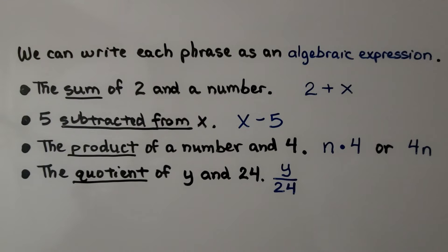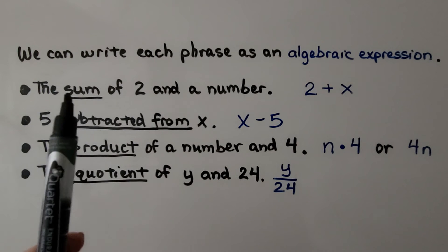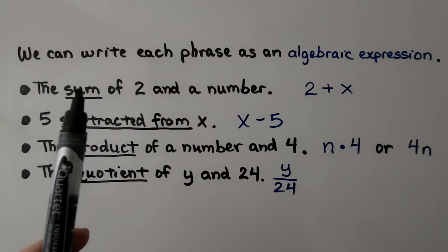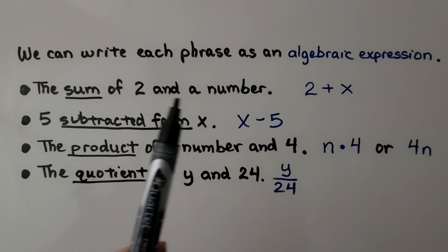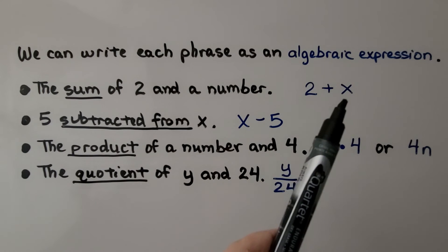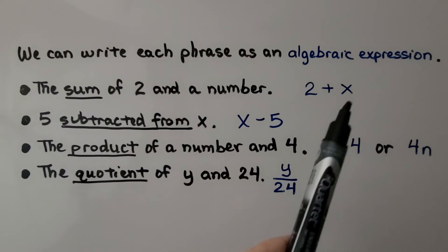We can write each phrase as an algebraic expression. If we see the sum of 2 and a number, well, sum is telling us addition. That's the answer for an addition problem. The sum of 2 and a number, we could put 2 plus x, or 2 plus n, or 2 plus y, using any variable there for that number we don't know.